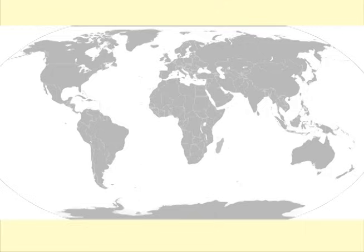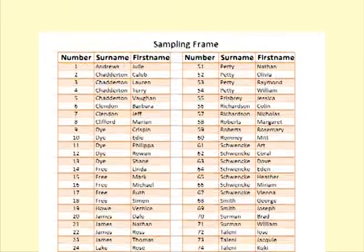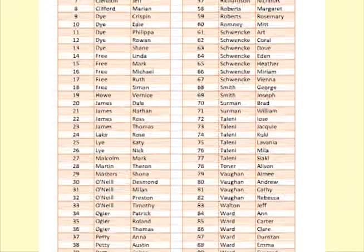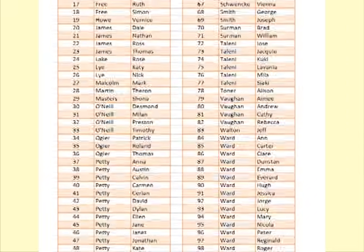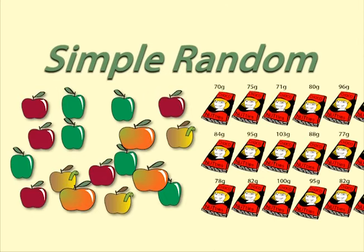However, it can be difficult and expensive to take a simple random sample when dealing with people. Simple random sampling is more practical when the population is geographically concentrated and when a good sampling frame exists. A sampling frame is a list of all the people or objects in the population of interest. Simple random sampling can be more easily implemented for natural and manufacturing populations.